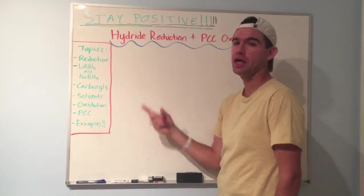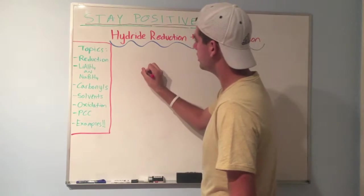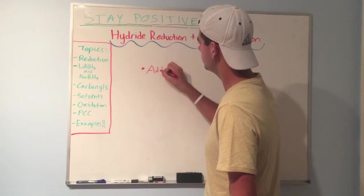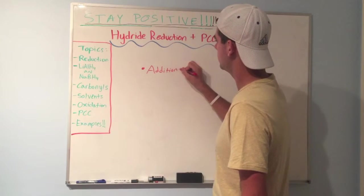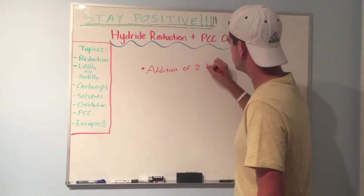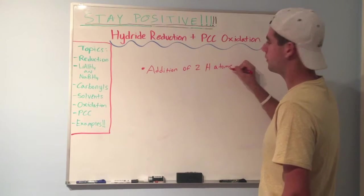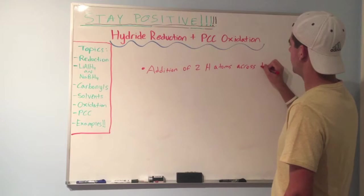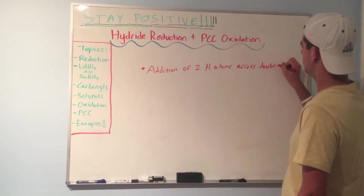So when we're talking about reduction in OCHEM, what we're really saying most of the time is the addition of two hydrogen atoms, two H atoms, across a double bond, across a pi bond.